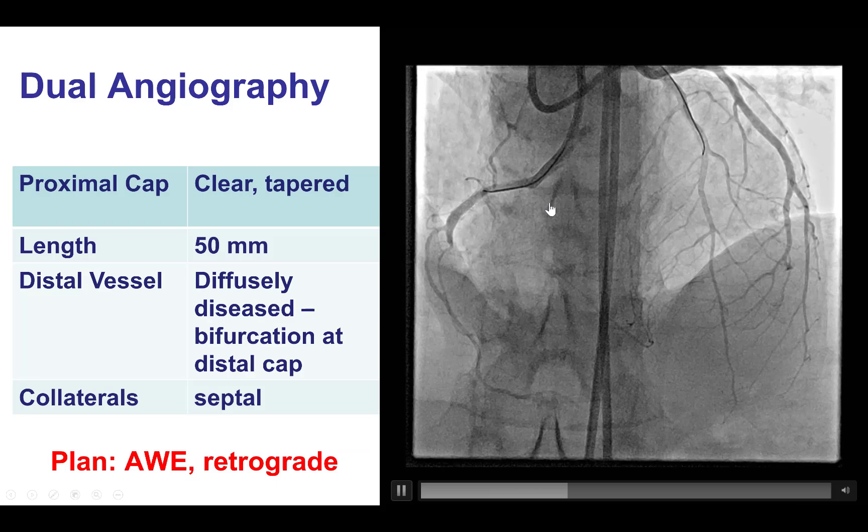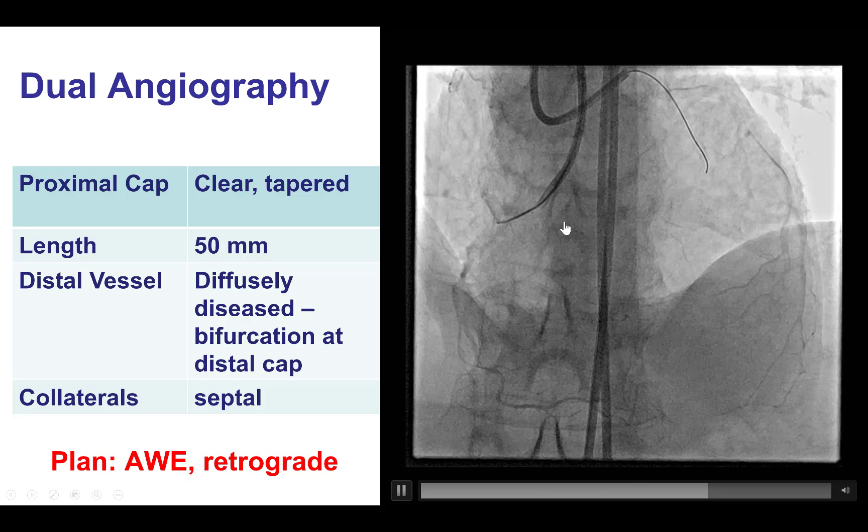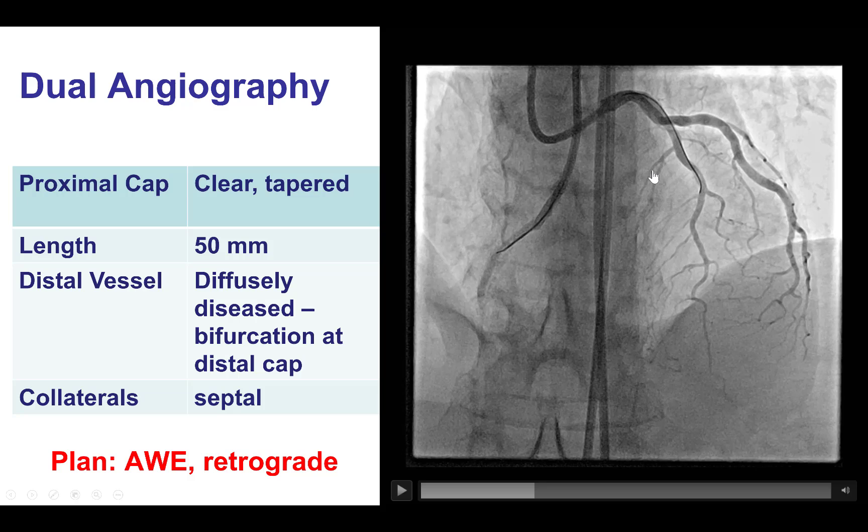Dual injection showed a CTO of the mid-right coronary artery. The occlusion length was about 50 mm. The proximal cap was clear. The distal vessel was diffusely diseased, and the distal cap was at the bifurcation of the PDA and the posterolateral vessel. There were good collaterals from the LAD — the septal collaterals — to the posterior descending artery.